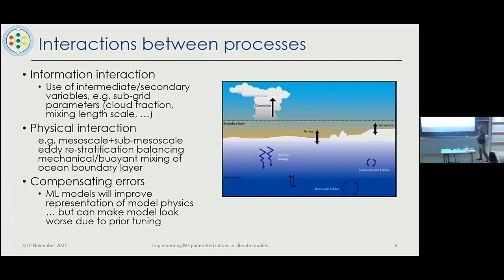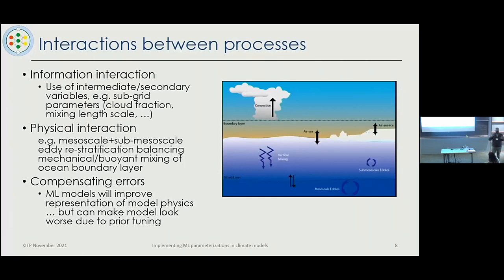There are also real physical interactions — balances between processes — that are meant to be there. If you make one parameterization better because the previous one wasn't doing a good job, you upset that balance, leading to a big adjustment in the model. This is behind what we call compensating errors: in a very big complex system, people did their best and then someone assembled everything and optimized to balance errors against each other to achieve equilibrium at the top of atmosphere. So it's very common that even now, improving a parameterization can make the model look worse, even if the physics is better represented.